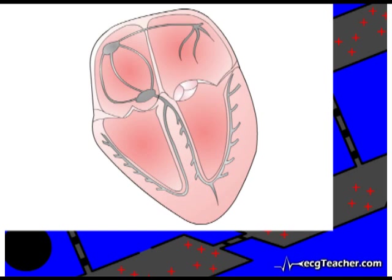Within the myocardium, depolarization spreads from cell to cell to cell at a rate of approximately 0.5 meters per second.